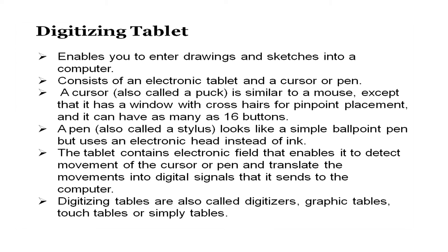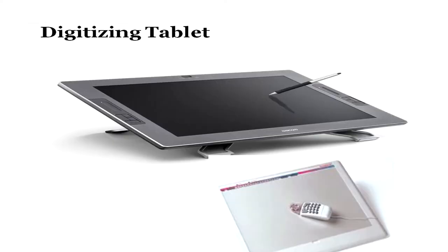The next device is the digitizing tablet, which helps us to enter drawings and sketches into a computer. It is a tablet with a cursor and a pen — the cursor is similar to a mouse and the pen is like a stylus. You can draw directly on the screen. The upper tablet on the slide contains a pen for drawing directly, and there is also a mouse-shaped puck to choose between various options. It is very useful for designers who would like to draw on the machine and capture the electronic form.